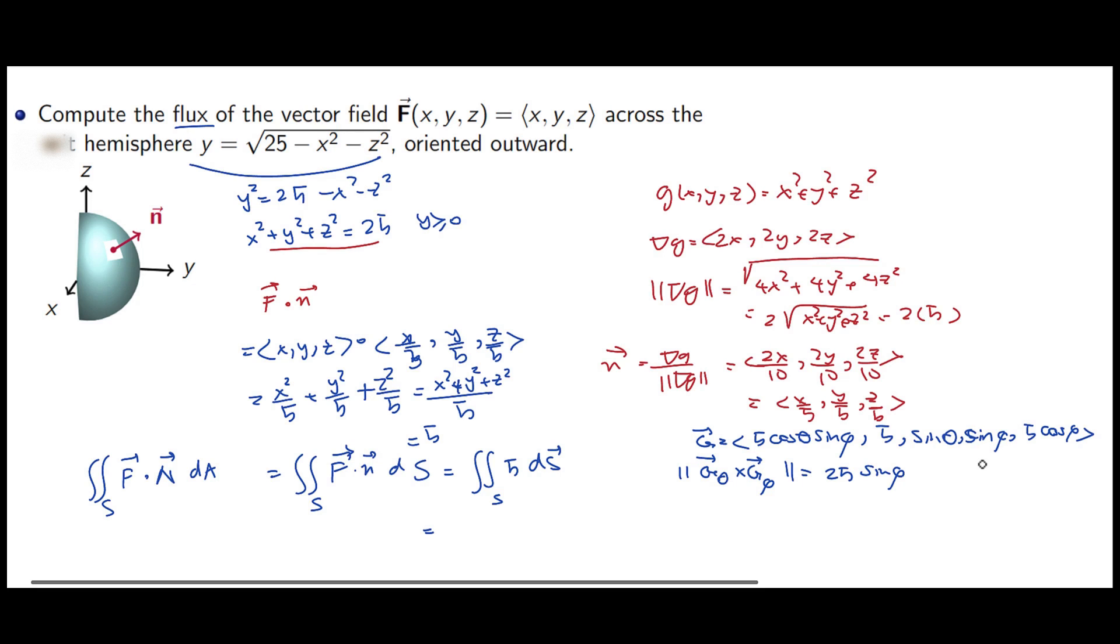And also, I know over here, because it's semi-sphere, theta is going to run between 0 and pi because it's only for y bigger than 0, and phi is between 0 and pi. So I can set this up as 0 to pi, 0 to pi, and 25 sine of phi d phi d theta.